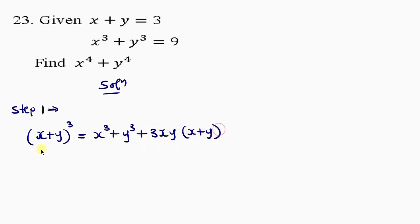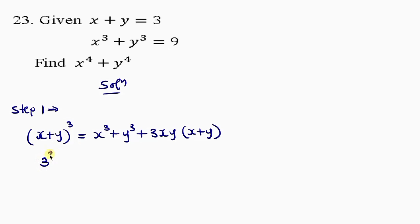This is the binomial expansion when you expand x plus y to the power of 3. Now we have to substitute our values. x plus y, as given in the question, is 3. So let's substitute — this becomes 3 raised to the power of 3.